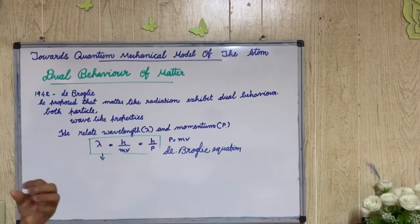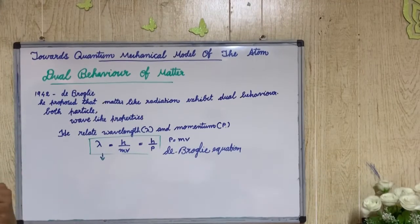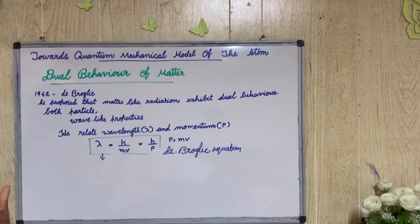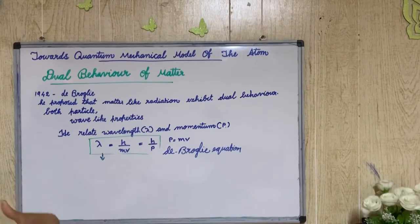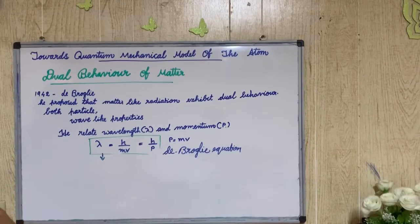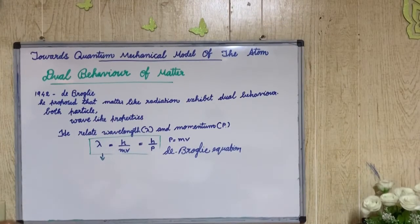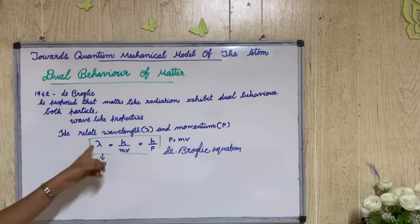For example, when we consider light, there are photons in it. Light exhibits wave nature, but we cannot directly see individual photons — it is not a massive object in the classical sense; it behaves as wave nature. A football, compared to an electron, has a very large mass, so its wave nature is not practically observable. So: larger mass means smaller wavelength — that is the key consequence of this equation.